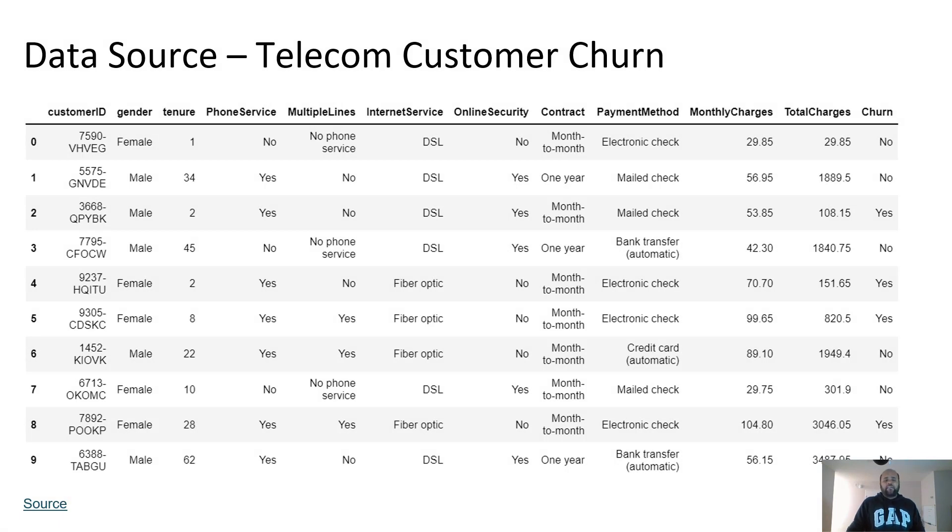So here's the data set I'm using for this demo today. It's a Telecom customer churn data set from Kaggle. The link is down here in the presentation. And basically, each row is a customer and you can see various attributes of the customer and the last column here represents whether that customer has left next month or whatever. I don't know the time period here, but basically it says yes or no.